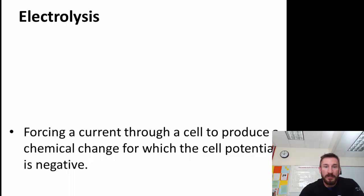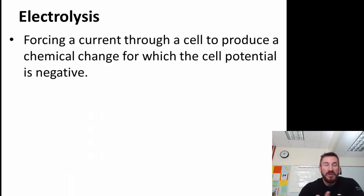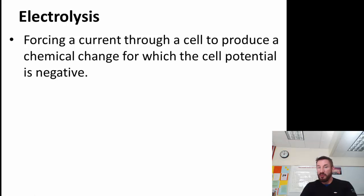For all these, the delta G will be positive and energy will need to be applied to make the process or reaction occur. Electrolysis is when you force a current through a cell to produce a chemical change for which the cell potential is negative.